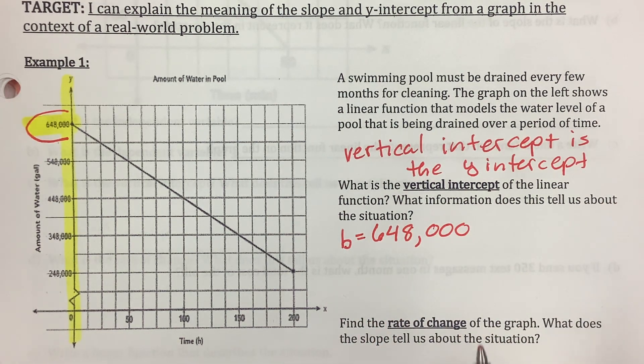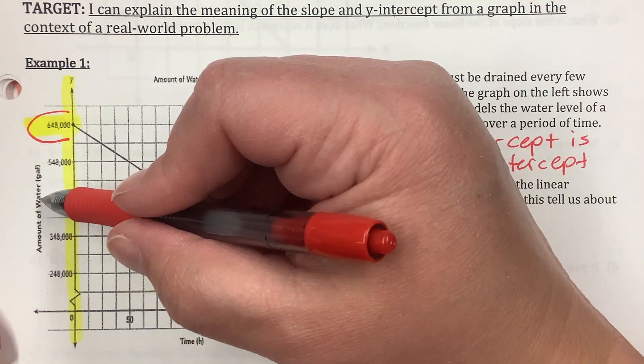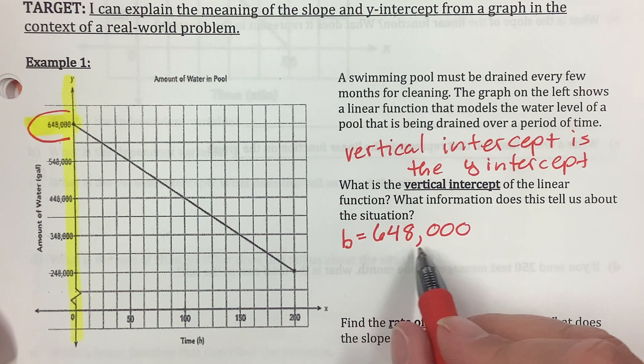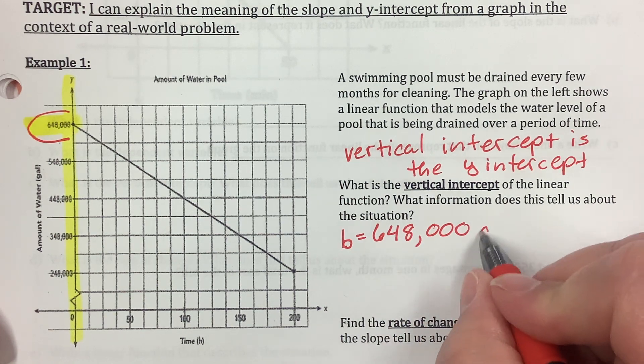And y-intercept is just where the line intercepts the y-axis, and this particular point is big. This is zero, 648,000. So, b is 648,000. Okay, I'm going to write that down. b equals 648,000. 648,000 what? Amount of water in gallons. So, this is 648,000 gallons.